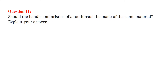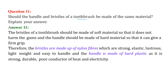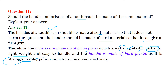Should the handle and bristles of a toothbrush be made of the same material? The bristles go into our mouth and deal with the gums and teeth, so they must not harm the gums — a very soft material is needed. The bristles are made of nylon fibers which are strong, elastic, lustrous, lightweight, and easy to handle. The handle is made of hard plastic because it needs to be strong, durable, and a poor conductor of heat and electricity.